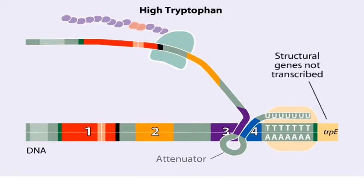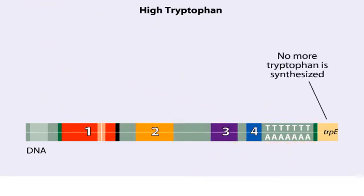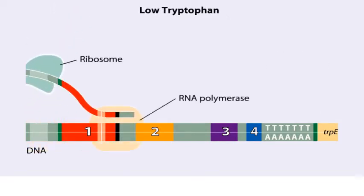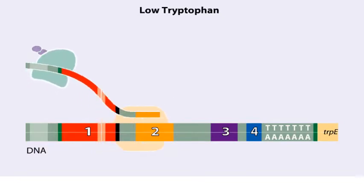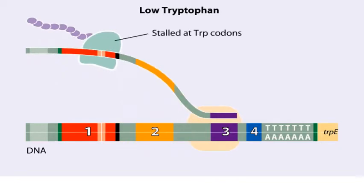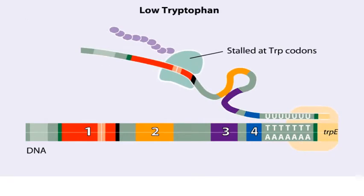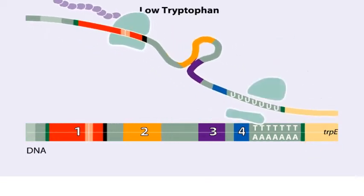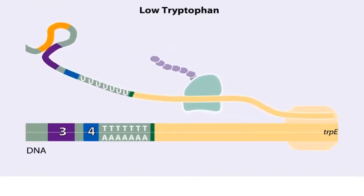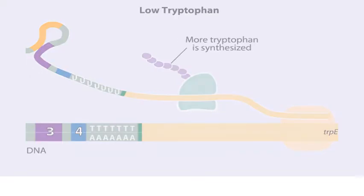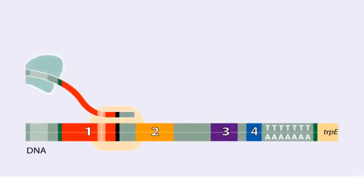The structural genes are not transcribed and therefore no additional tryptophan is synthesized. When tryptophan is scarce, the ribosome stalls at the tryptophan codons, so region two is not covered when region three is transcribed, allowing regions two and three to form a hairpin that does not terminate transcription. Because region three is paired with region two it cannot pair with region four to form an attenuator. Transcription continues, RNA polymerase transcribes the structural genes, which are translated into enzymes that in turn synthesize more tryptophan.